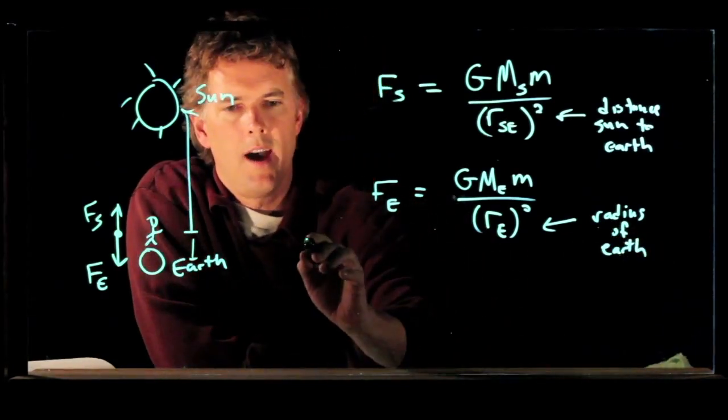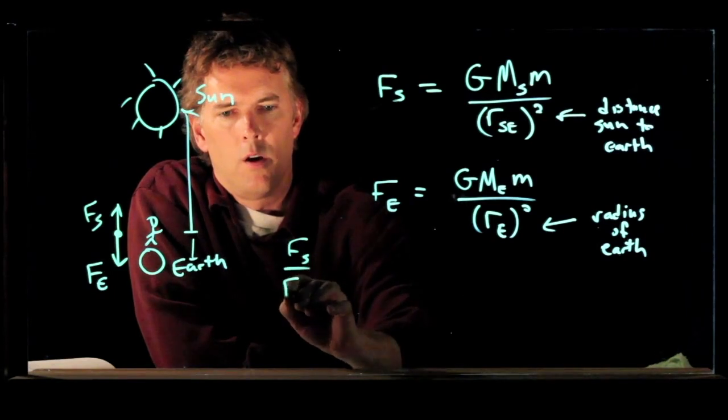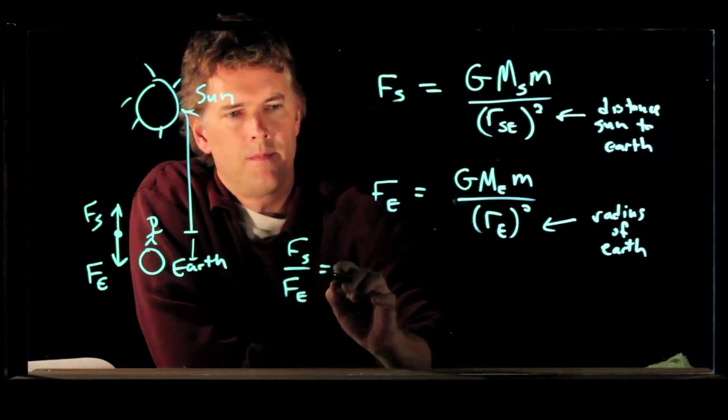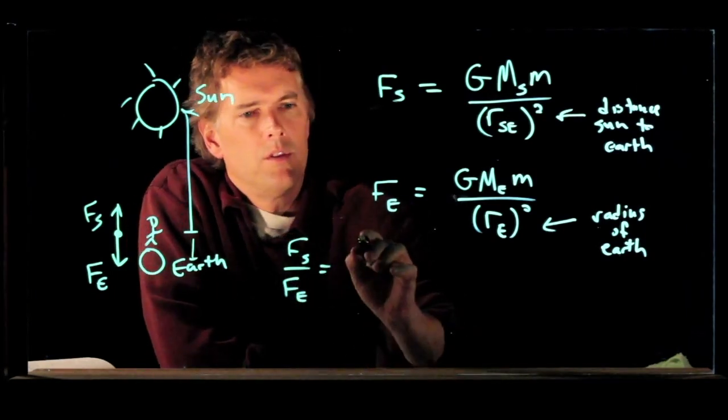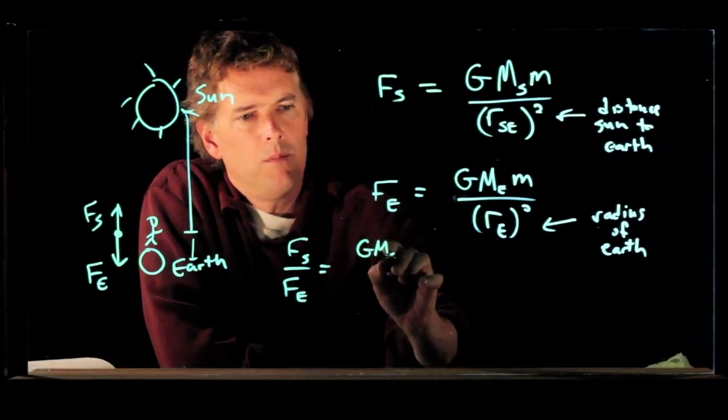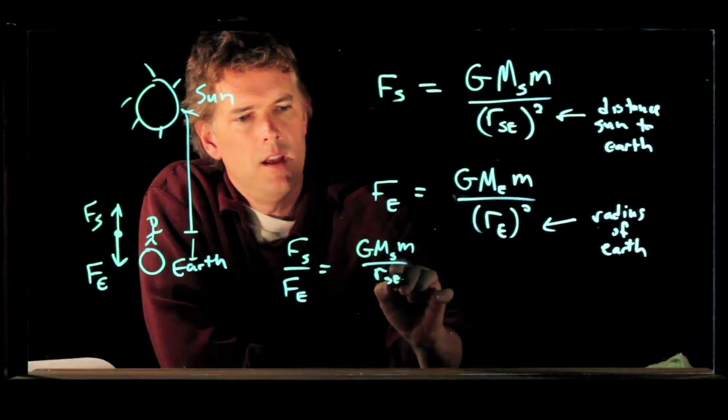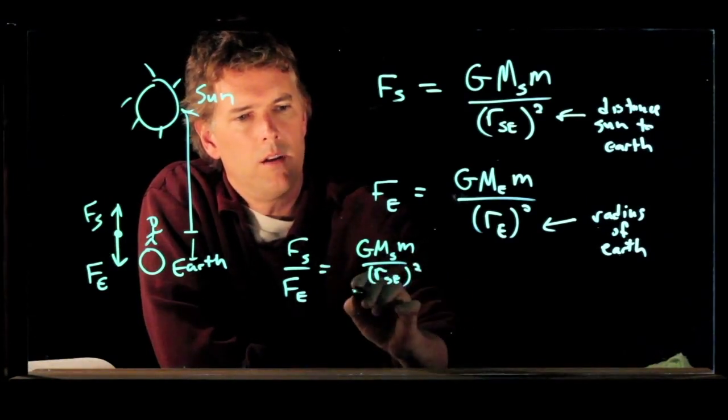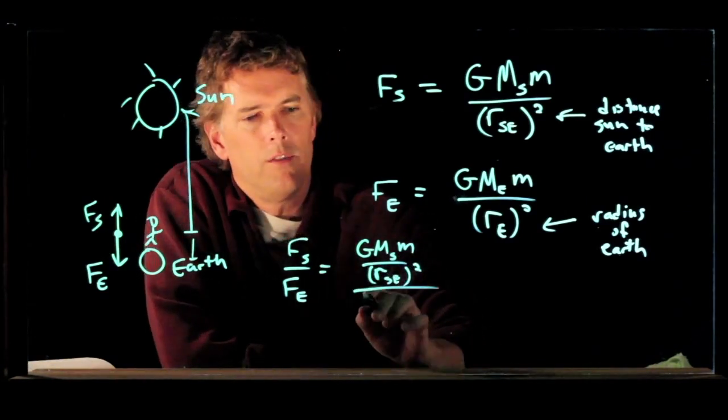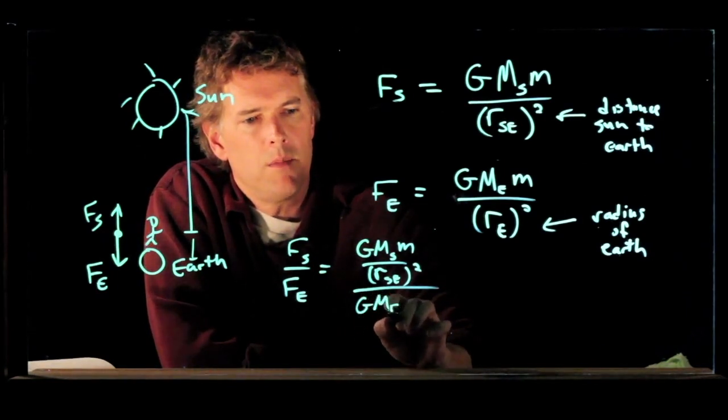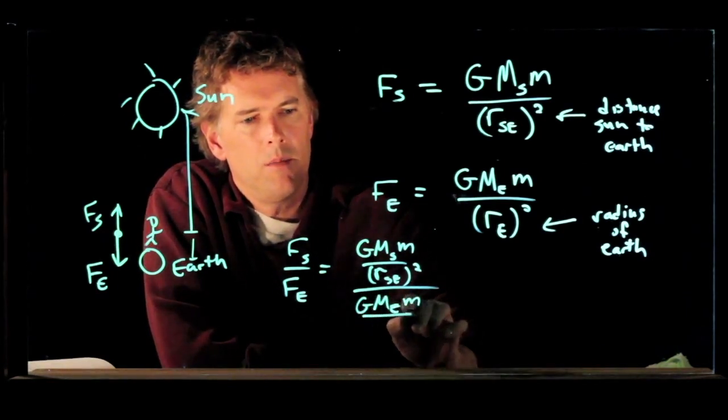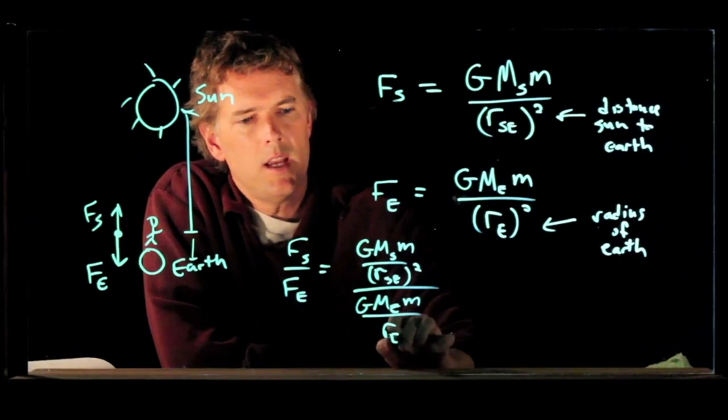Okay, and so now we can do the ratio. Fs over Fe equals G M sub s m over r s e squared all over G mass of the earth, little m over r e squared.